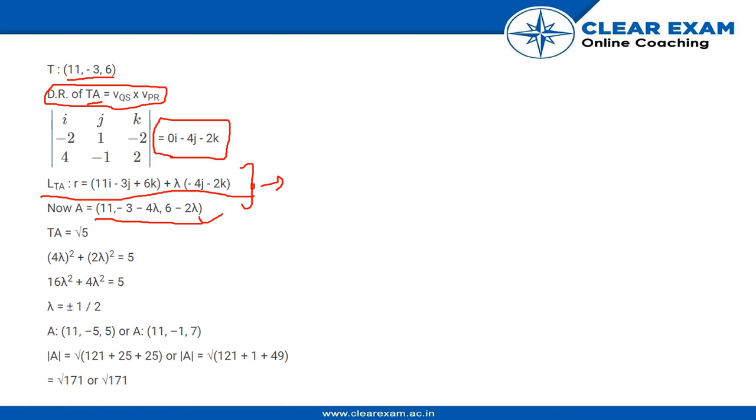So the general point can be written like this. And we know that T and A have a distance of root 5 between them. So by the distance formula, X minus the coefficient of T, that is 11, the whole square,